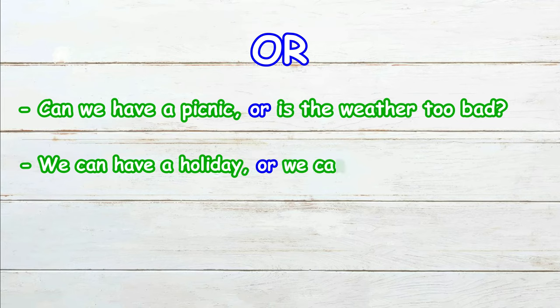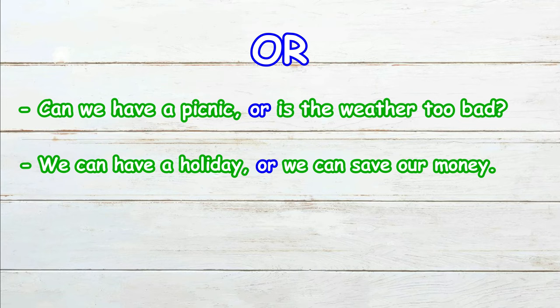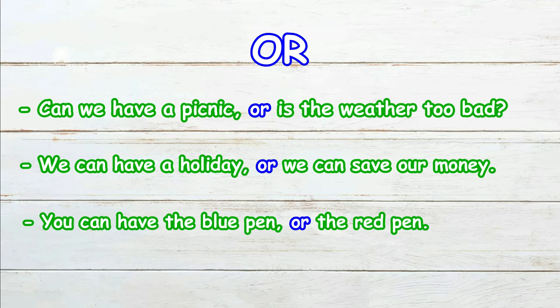We can have a holiday or we can save our money. Check out another example: you can have the blue pen or the red pen. So in all these examples, 'or' is helping us to connect the sentences and clauses together.